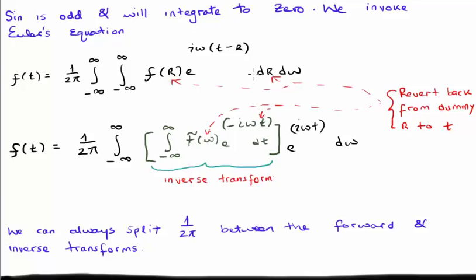Next, we split the exponential between a positive and negative exponential. We note that each of the i omega t here can be separated out. And we are left with our Fourier transform pair.